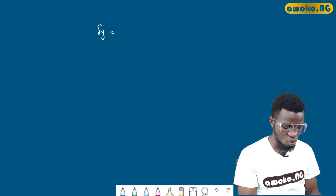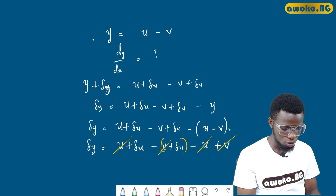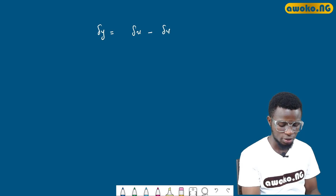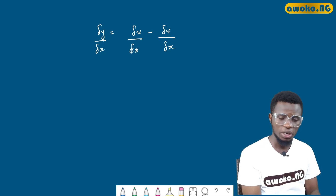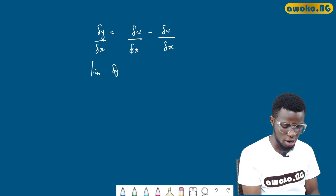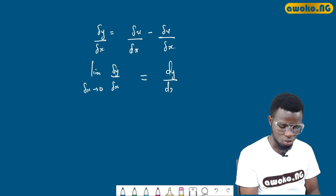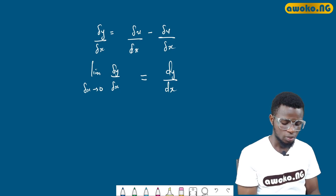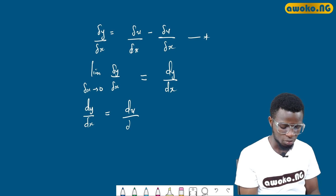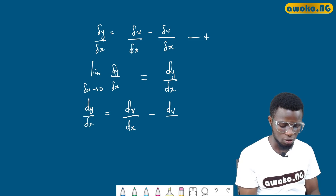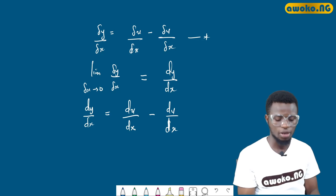So Δy equals Δu minus Δv. Dividing through by Δx and taking the limit of the left-hand side as Δx tends to zero gives us the full differential. So this equation becomes dy/dx equals du/dx minus dv/dx. This is our final answer — this is how we differentiate both addition and subtraction.